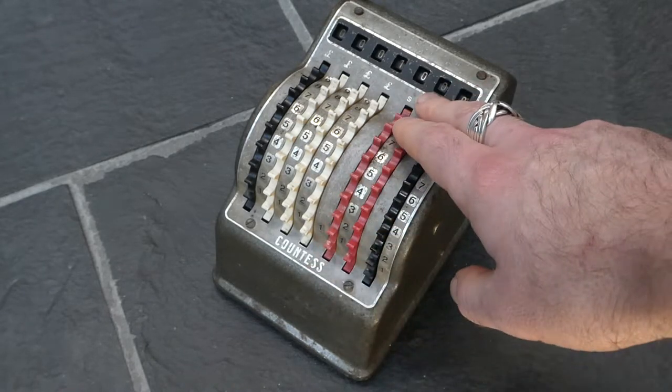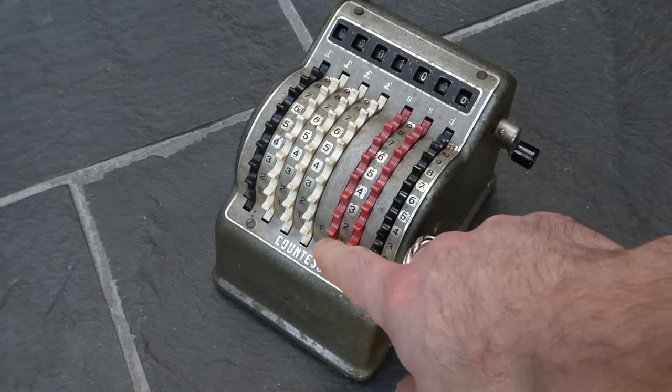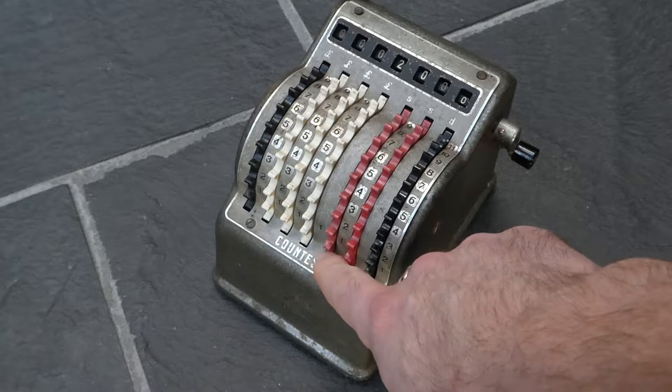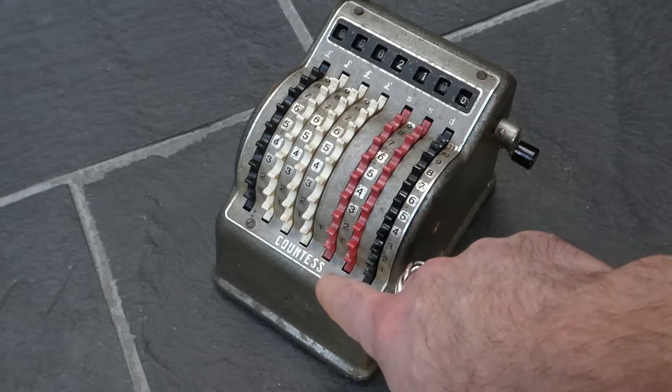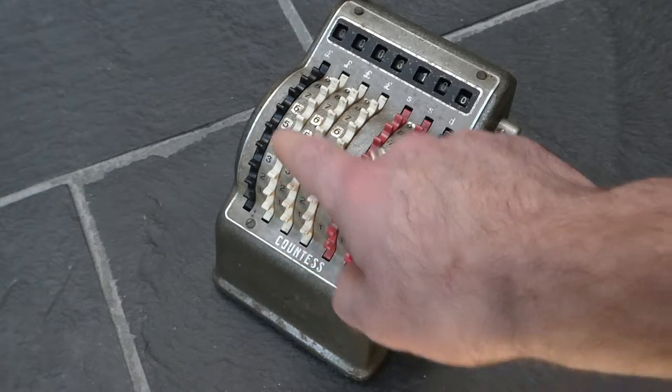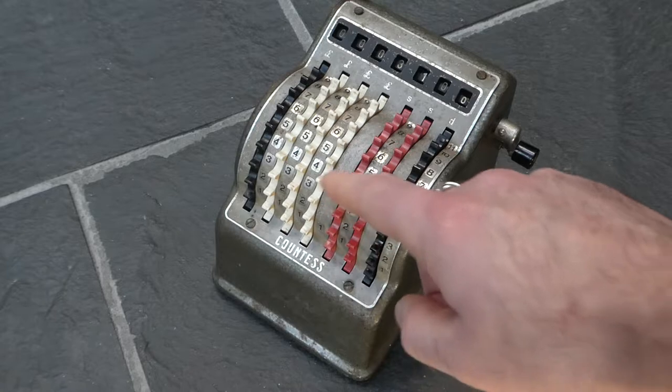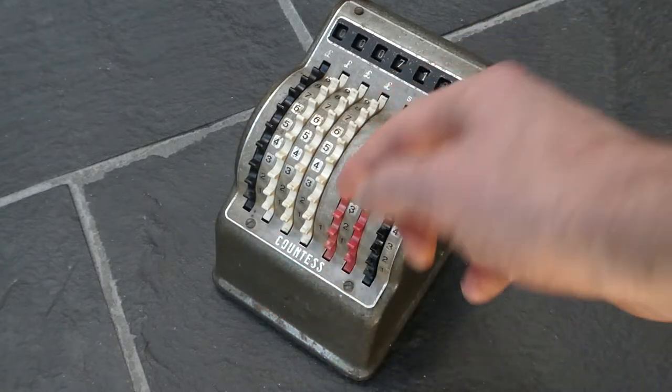Because there are 20 shillings in a pound. So this third column here, it only shows zeros and ones, and each time when it goes above one it carries over. And the remaining four columns are for the pounds, and those are ordinary decimal columns.